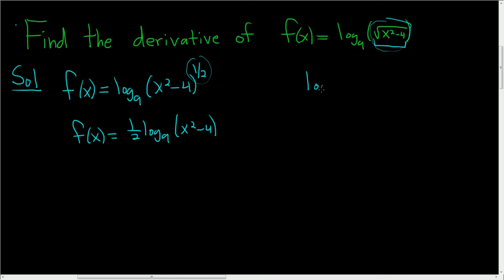So first recall that the derivative of the log base 9 of x, this is 1 over x, 1 over ln 9. So in this case, it's very similar, except we have x squared minus 4, so we will have to use the chain rule.